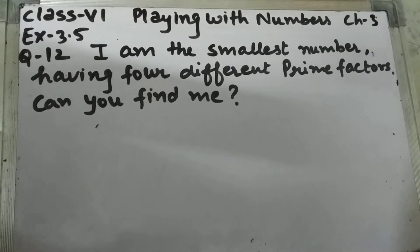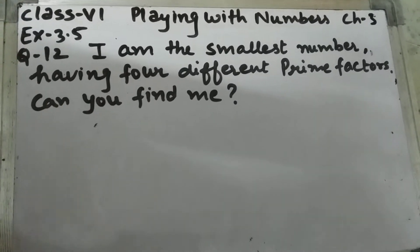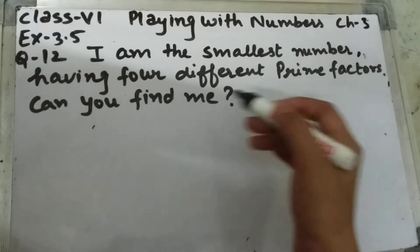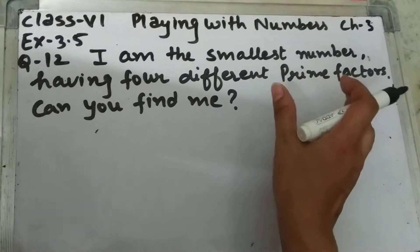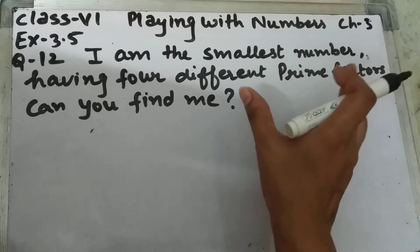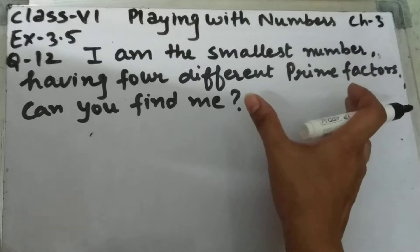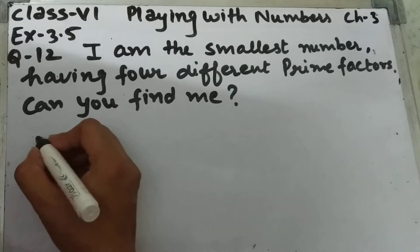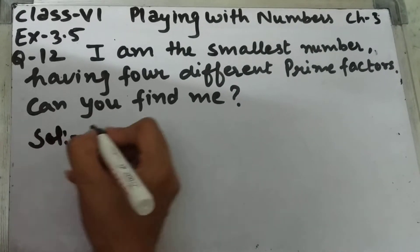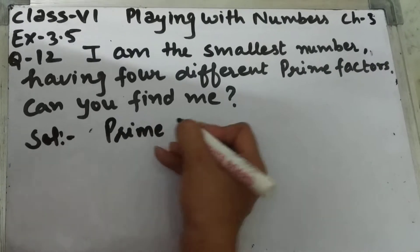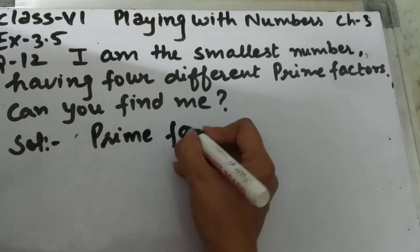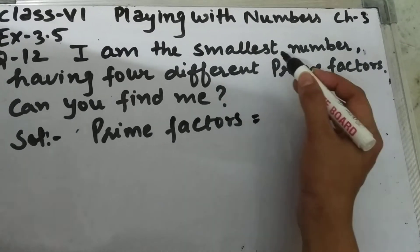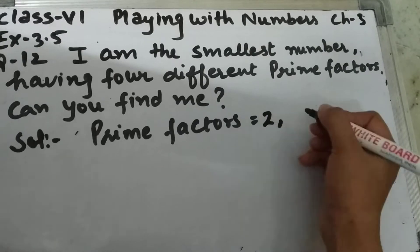Now let's start question number 12 of exercise 3.5. The question is: I am the smallest number having 4 different prime factors — can you find me? The number is the smallest and it has 4 different prime factors. Since the number is the smallest, we will use the 4 smallest prime numbers as the prime factors.